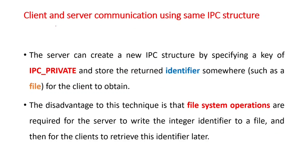Now let us consider a client and server communication scenario using the same IPC structure. There are various ways for the client and server to agree on the same IPC structure. In the first approach, the server creates a new IPC structure by specifying a key of type IPC_PRIVATE. This generates a unique private key that will not be known to outside processes. This key is returned as an identifier and stored in a file for the client to obtain, where the path to the file should be known to the client.